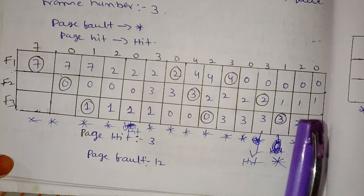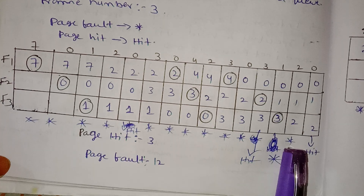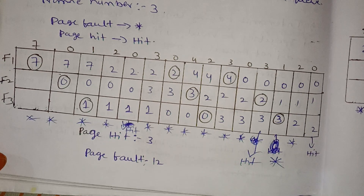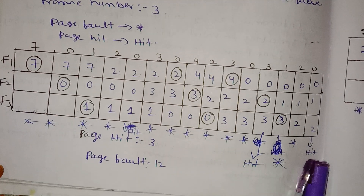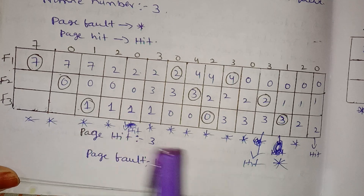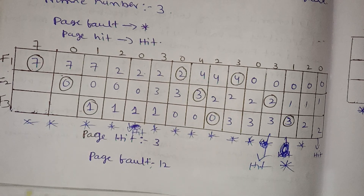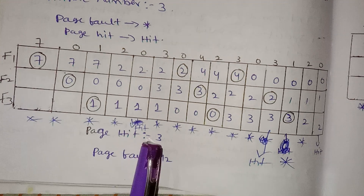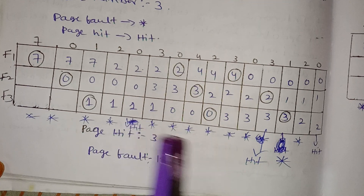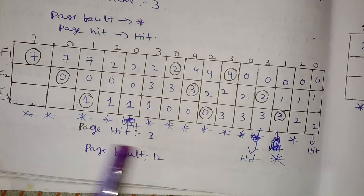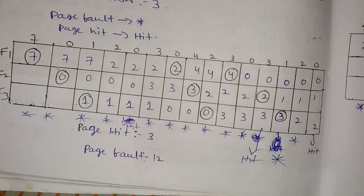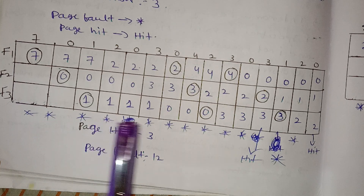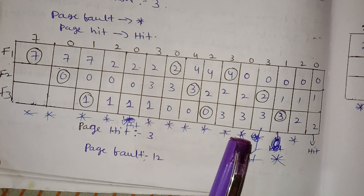If you have a new page, you can replace the oldest one. If it is already present, it is a hit. In the table, we count: 1, 2, 3, 4, 5, 6, 7, 8, 9, 10, 11, 12 entries.